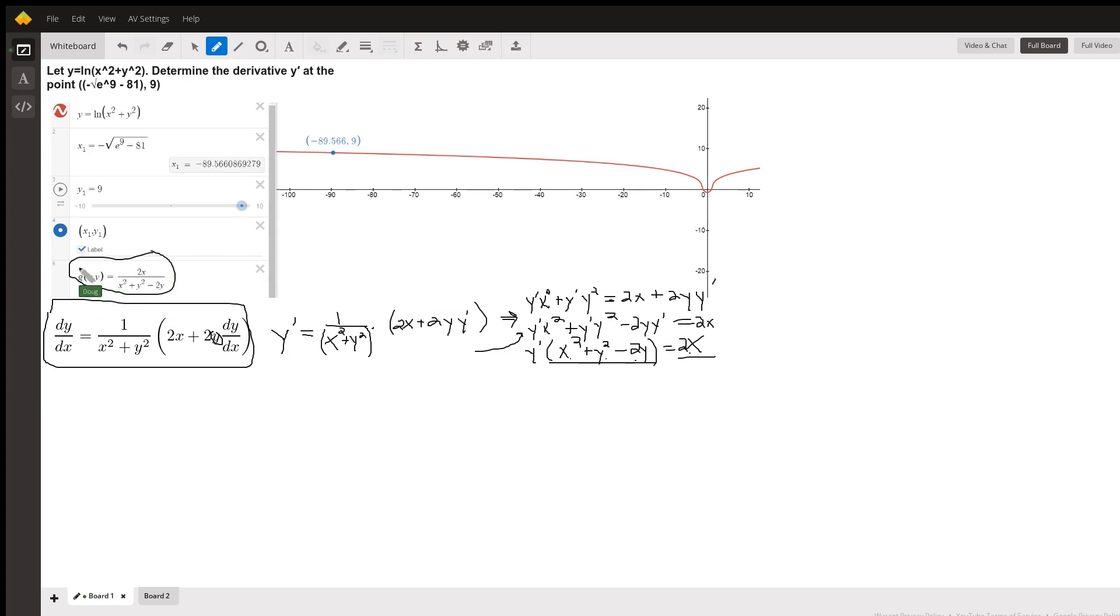Okay, so g of xy is the derivative. 2x over the quantity x squared plus y squared minus 2y.